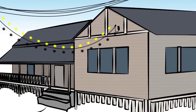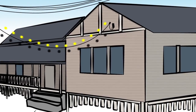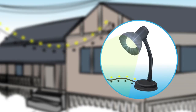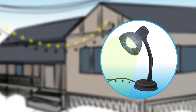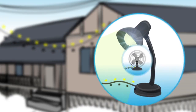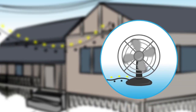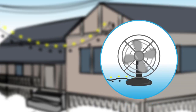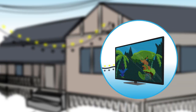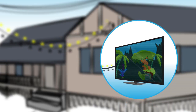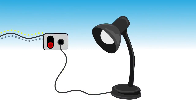In electricity, electrons travel in a circuit or loop. For an electrical appliance to work, the electricity needs to go in through wiring, do its job, then come out again and go back towards the power source. There must be a continuous circuit for the electricity to travel through.